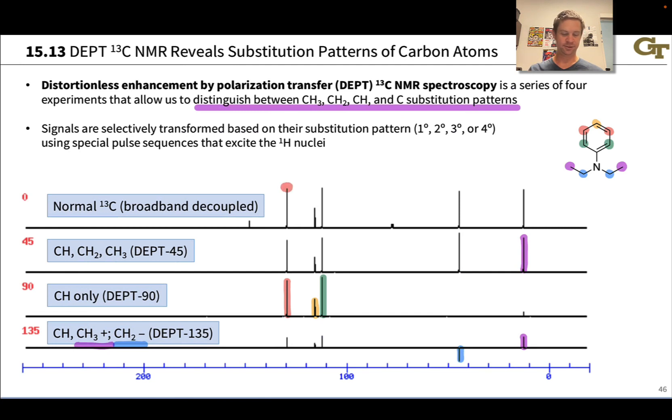At this point, we've accounted for all the signals in the original carbon-13 NMR spectrum. We've got a CH in the aromatic region here, a CH here, and a CH here. We've got a blue alkyl signal here, CH2, and this purple signal corresponds to a CH3. DEPT is pretty powerful. It helps us associate signals in a carbon-13 NMR spectrum with particular carbons in the molecular structure.